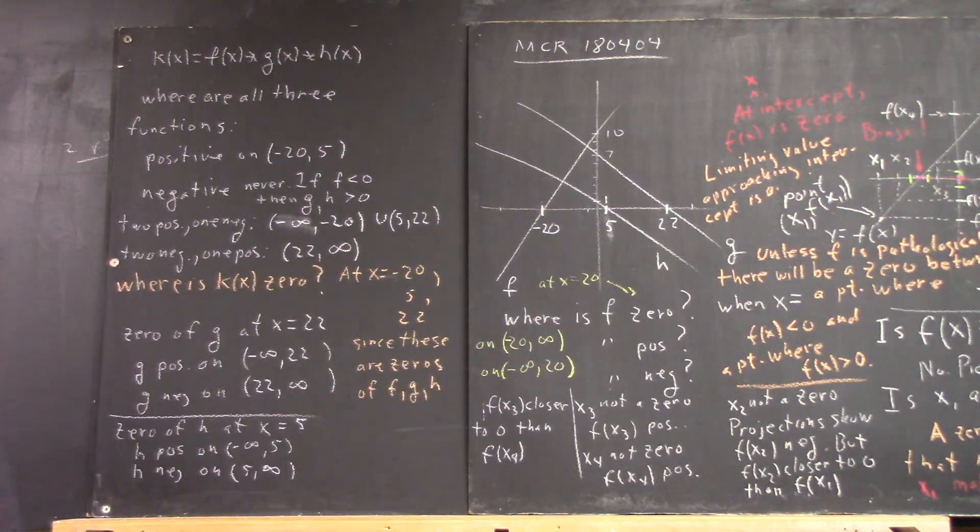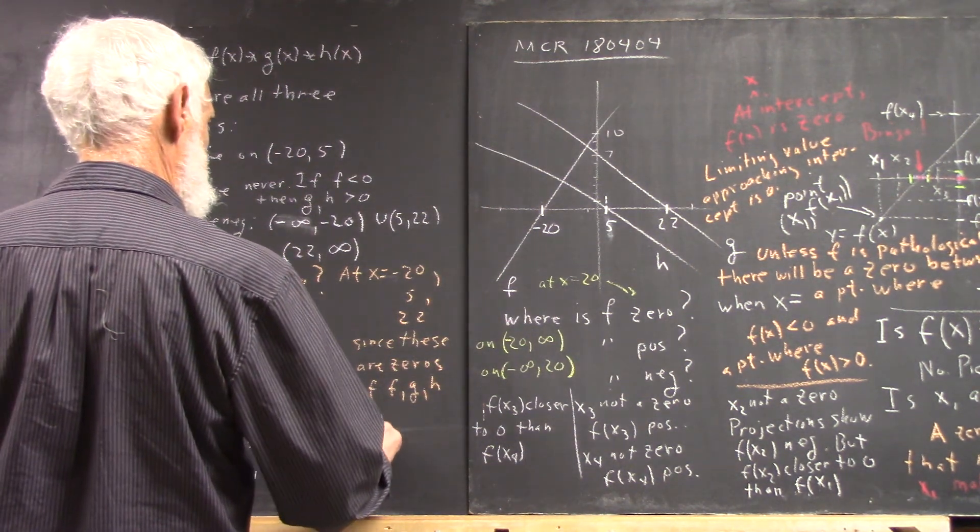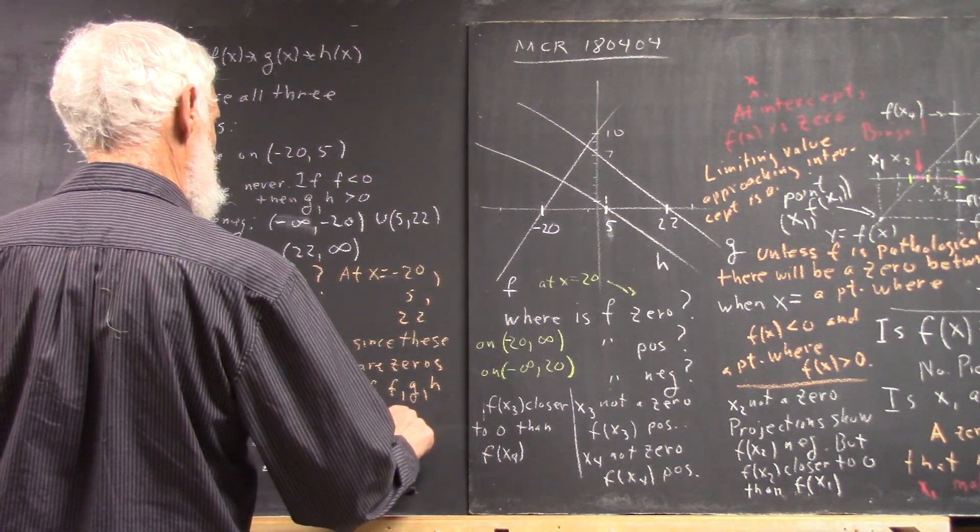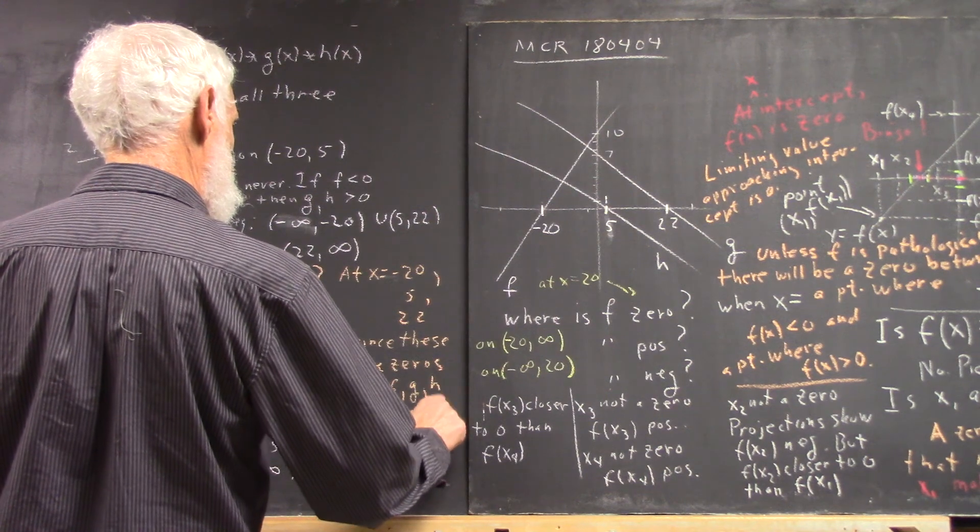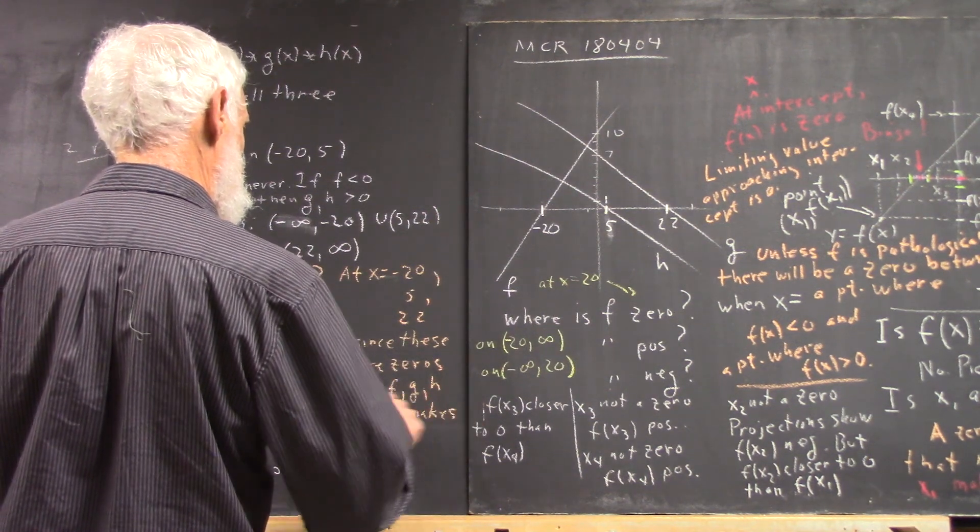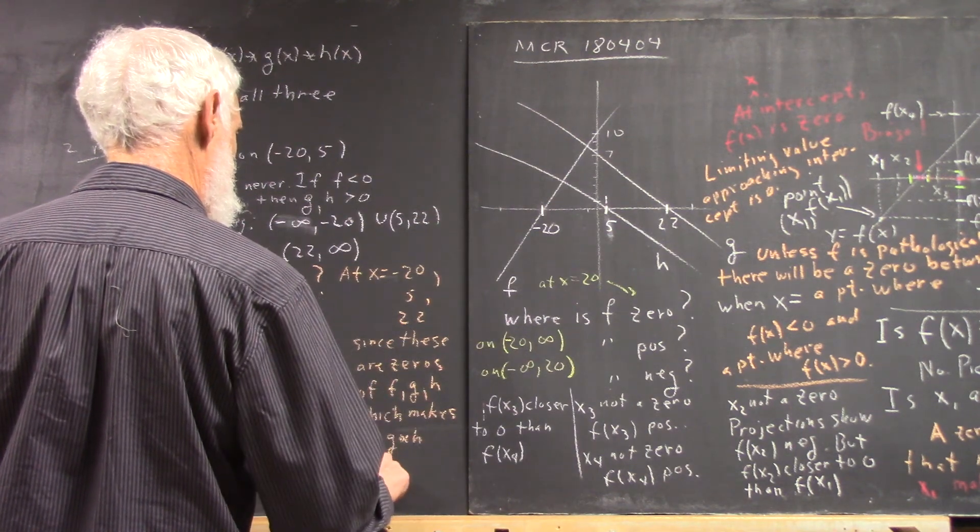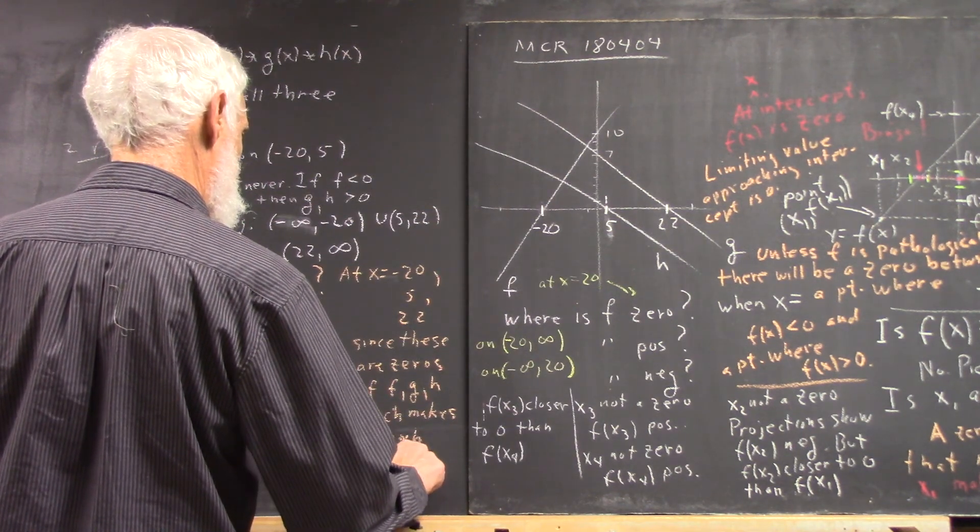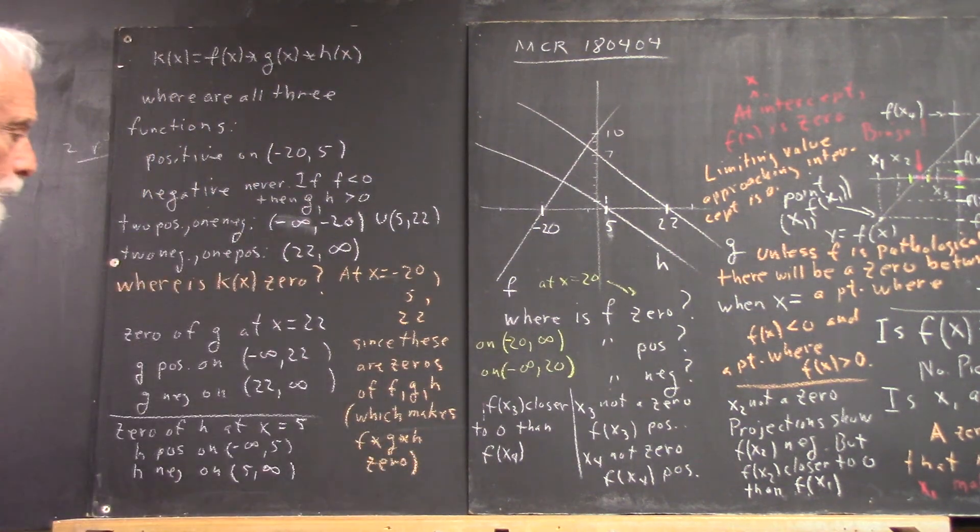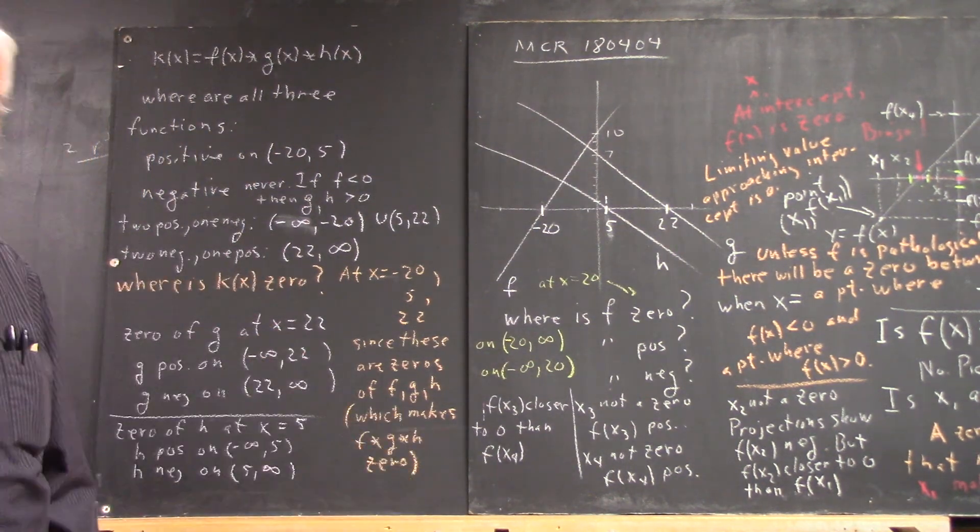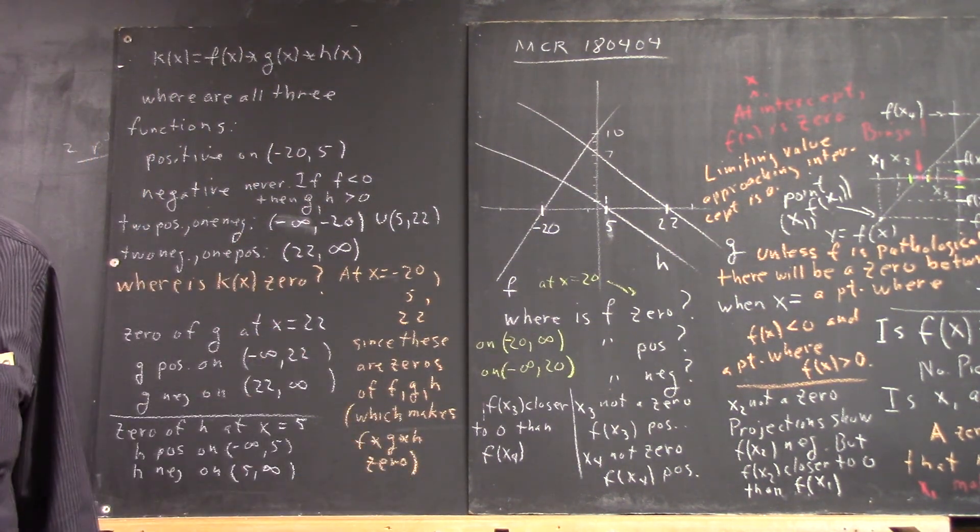Since these are zeros of f, g, and h, and then just to add to the point, that is what makes f times g times h zero, right?